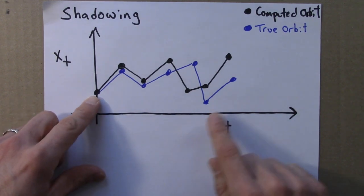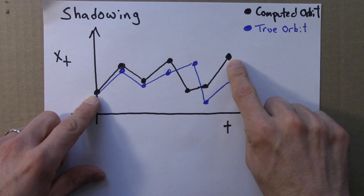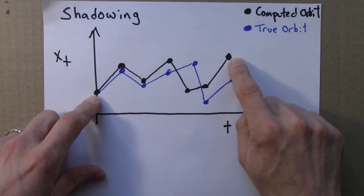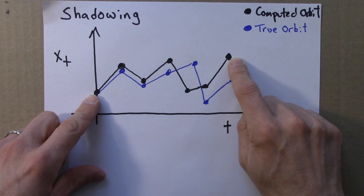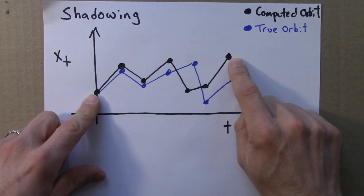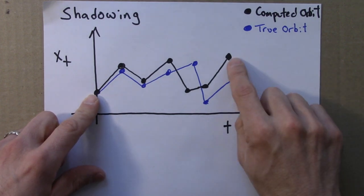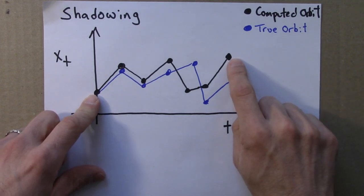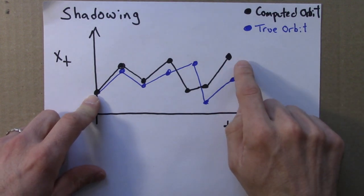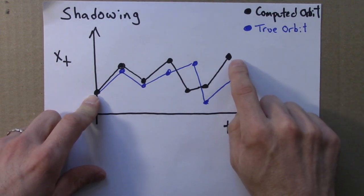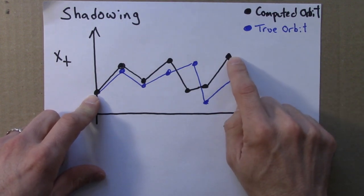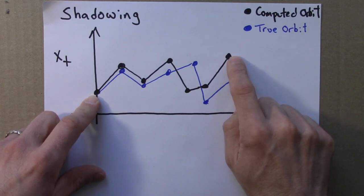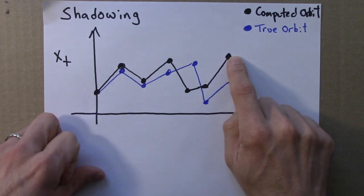So at this point we can ask: if this black curve, this black time series, is not the true orbit, what is it? Does it have any meaning at all, or is it just garbage — just some sort of randomness? And amazingly, it turns out that this computed orbit does have some meaning. It's the true orbit for some other initial condition.